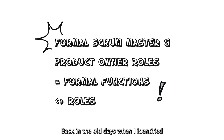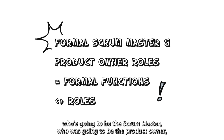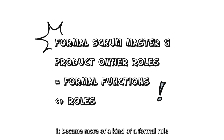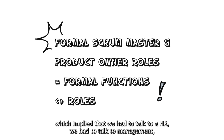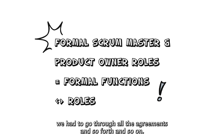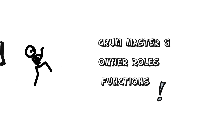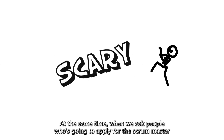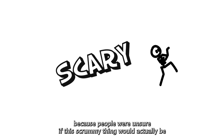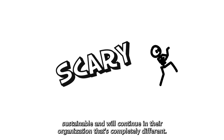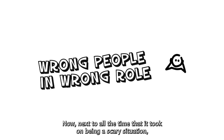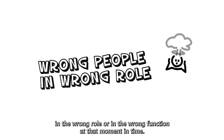Back in the old days when I identified who's going to be the Scrum Master and who's going to be the Product Owner, it became more of a formal role, which implied that we had to talk to HR, we had to talk to management, we had to go through all the agreements and so on. So it took quite some time for us to move ahead. At the same time, when we asked people who's going to apply for the Scrum Master or Product Owner role, it became a scary situation because people were unsure if this Scrum thing would actually be sustainable and would continue in their organization.